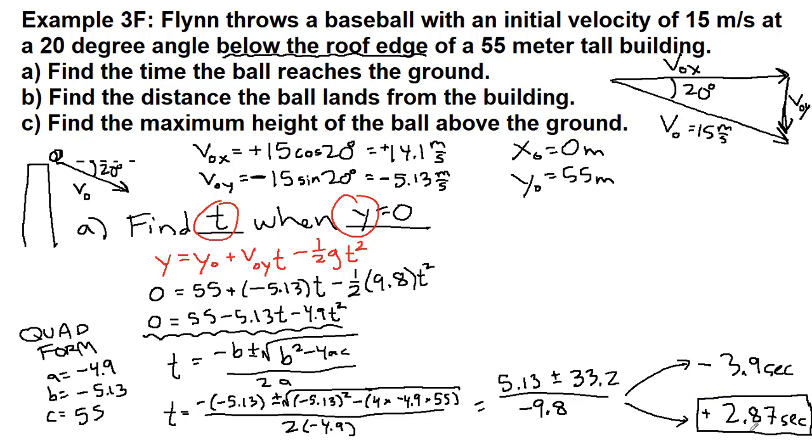That becomes our correct answer. We don't have time travel in physics, and if we're thinking about the motion of the ball at the top of the roof, we were throwing it downwards. There is this kind of parabola shape.